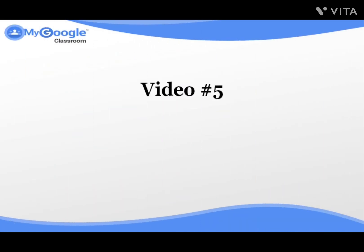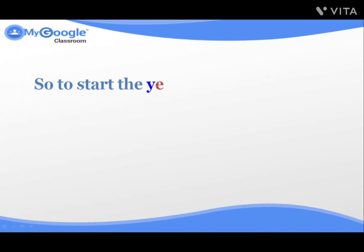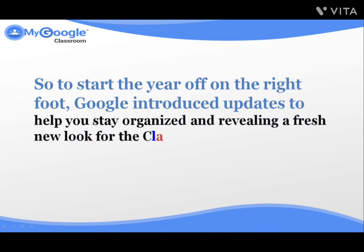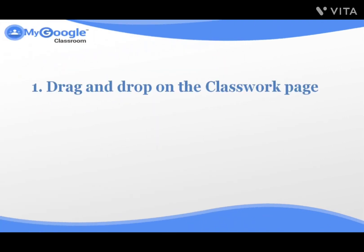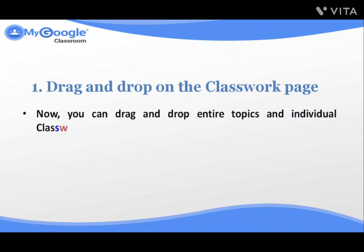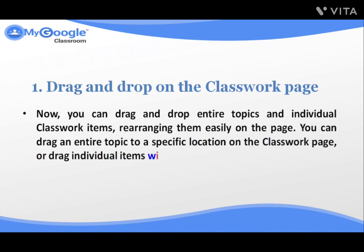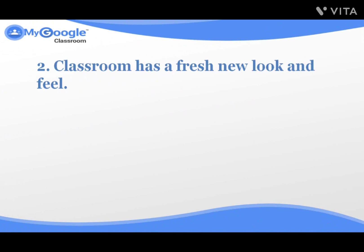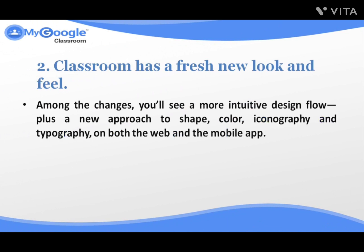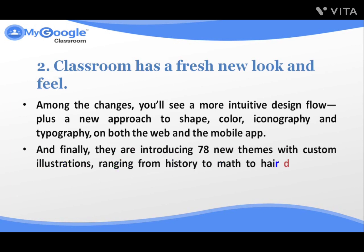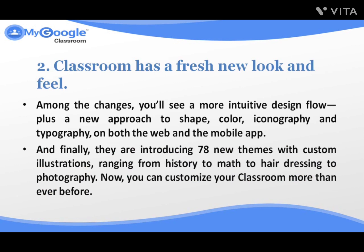My Google Classroom, Video number five: Latest Updates to Google Classroom. To start the year off on the right foot, Google introduced updates to help you stay organized, revealing a fresh new look for the Classroom you know and love. Number one: Drag and drop on the classroom page. Now you can drag and drop entire topics and individual classroom items, rearranging them easily. You can drag an entire topic to a specific location on the classroom page, or drag individual items within and in between topics. Number two: Classroom has a fresh new look and feel. Among the changes, you'll see a more intuitive design flow, plus a new approach to shape, color, iconography, and typography on both the web and mobile app. They are introducing 78 new themes with custom illustrations ranging from history to math, to hair design, to photography — now you can customize your classroom more than ever before.